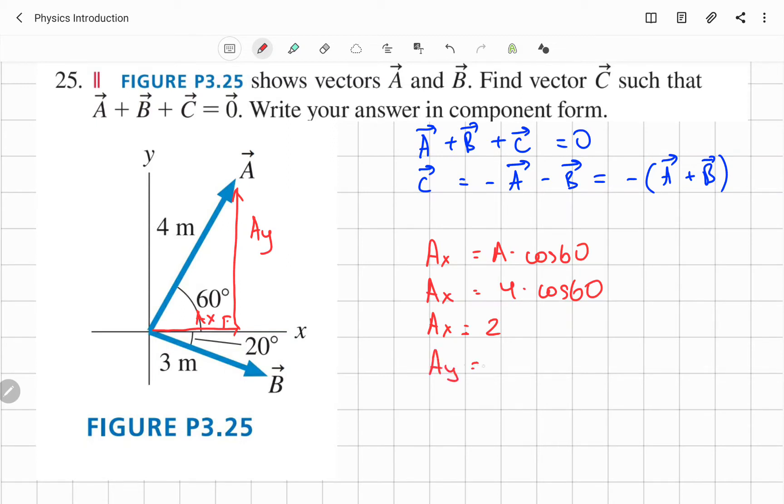Y component, Ay equals A times sine 60, which is 4 times square root 3 over 2. So it's 2 square root 3. This is the x and the y component for first vector, for A vector. Both positive because of the direction as it's given in this figure.